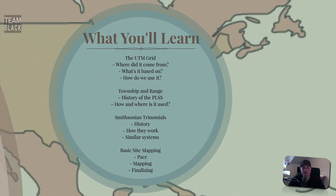Here's what we're going to learn today. We're going to learn about the UTM grid: where did it come from, what's it based on, how do we use it, township and range system, Smithsonian trinomials, and basic site mapping. Township and range and Smithsonian trinomials have some pretty fascinating backgrounds, so we're going to learn about that too.